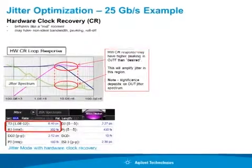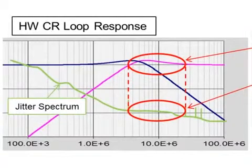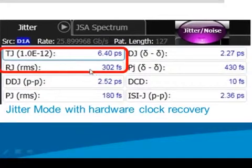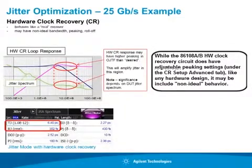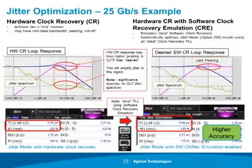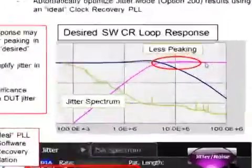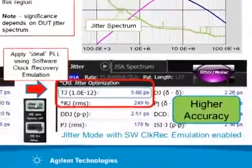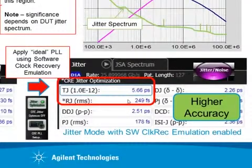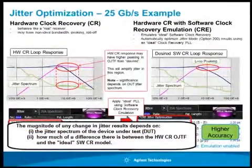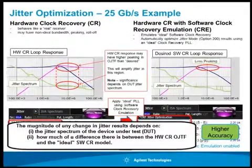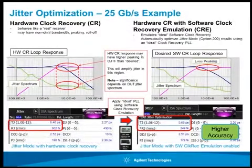Here's an example. The green trace shows the jitter spectrum of an incoming signal, and the pink trace shows the observed jitter transfer function of our hardware clock recovery. Measuring with jitter mode, random jitter is just over 300 femtoseconds and total jitter is 6.4 picoseconds. In this case, the hardware clock recovery may have more peaking than we want. By applying an ideal software clock recovery to emulate a model with less peaking, random jitter drops to just under 250 femtoseconds — a more accurate RJ measurement used to calculate a more accurate total jitter. 50 femtoseconds might not seem like a lot, but at 28 gigabits per second for CEI 28 gig VSR, that's more than 10% of the RJ budget.